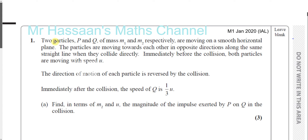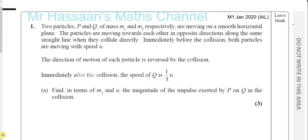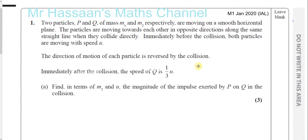In this question we're told about two particles, P and Q, of mass M1 and M2 respectively, and they're moving on a smooth horizontal plane. The particles are moving towards each other in opposite directions along the same straight line when they collide directly. Immediately before the collision both particles are moving with speed U. The direction of motion of each particle is reversed by the collision and immediately after the collision the speed of Q is a third U.